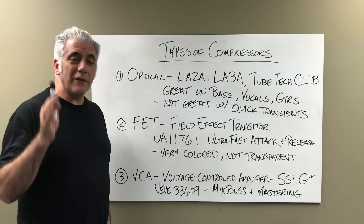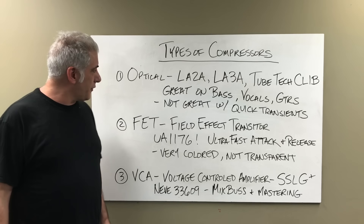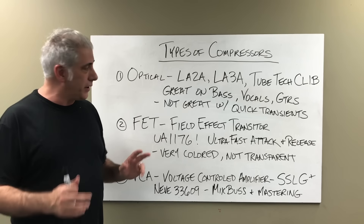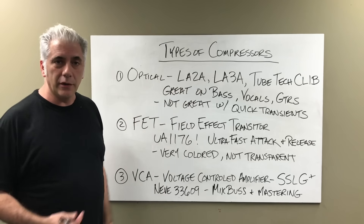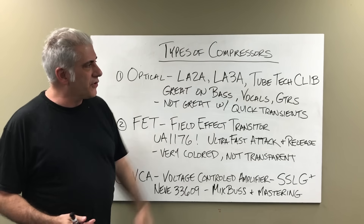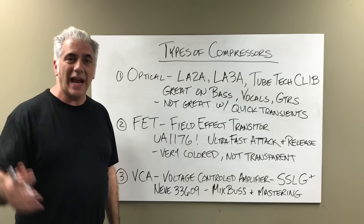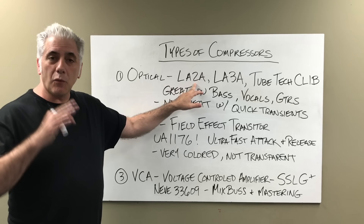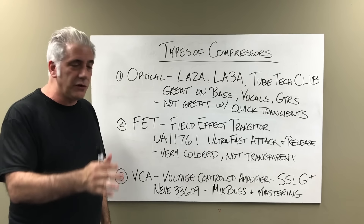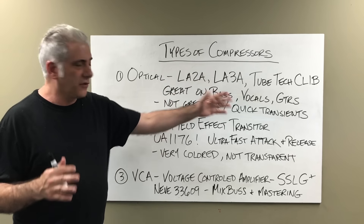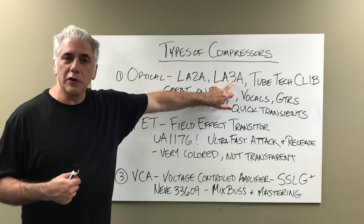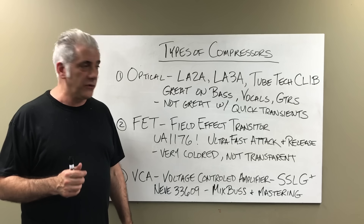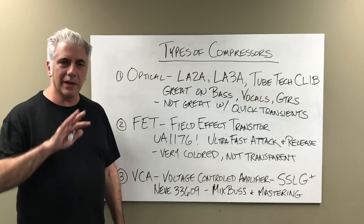Now let's discuss types of compressors. You've heard terms like optical or opto compressor. The most commonly seen ones in plugin or hardware form are the LA-2A by Teletronics — Universal Audio has a great emulation — the LA-3A, and the Tubetech CL-1B, which is really common in Nashville for tracking vocals. These are great on bass — the LA-2A especially. Daniel Lanois, who produced Peter Gabriel's and U2's records, uses it on everything. Chris Lord-Alge's go-to compressor is the LA-3A for electric guitars, though it's not the compressor for grabbing really quick transients.